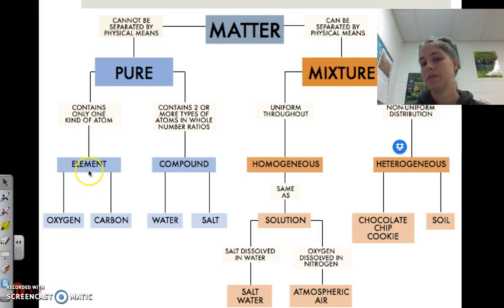So if I cannot separate it by physical means, it's pure. If it only contains one type of atom, then I can say it's an element. If it is pure but contains two or more types of atoms, then it's a compound.